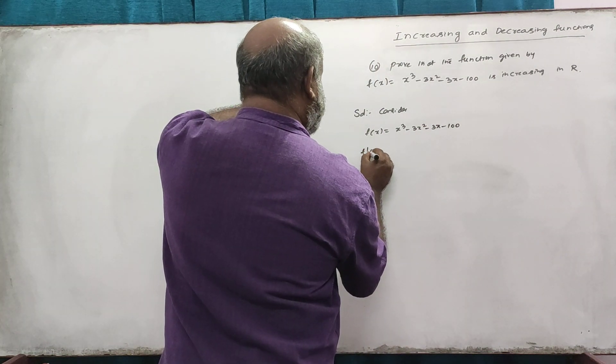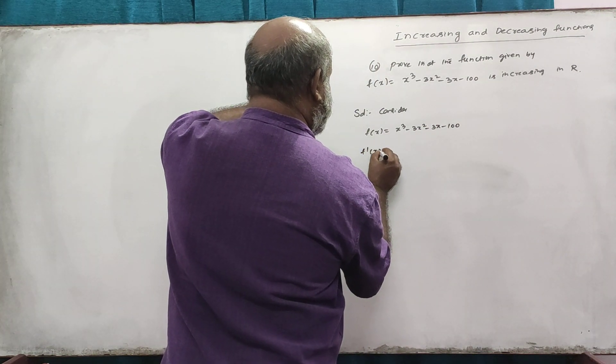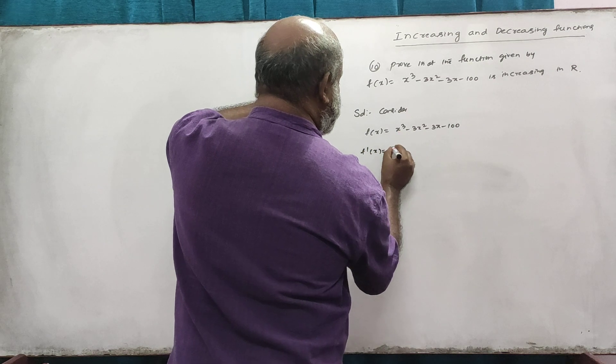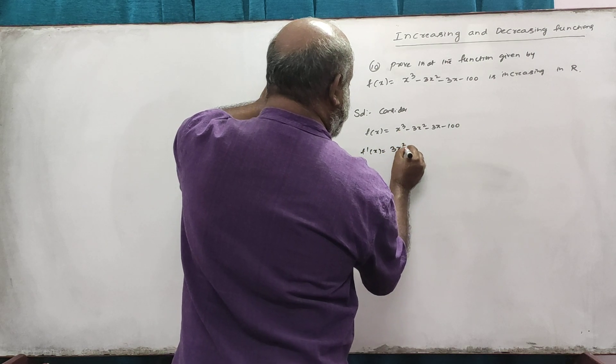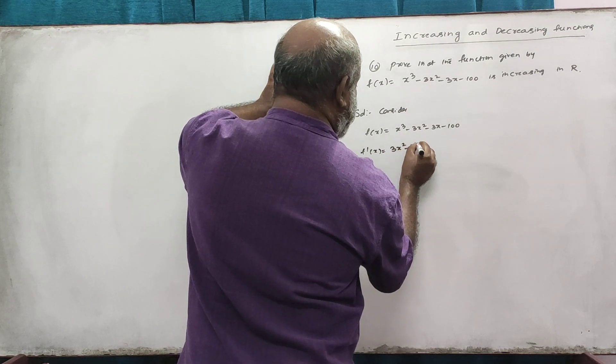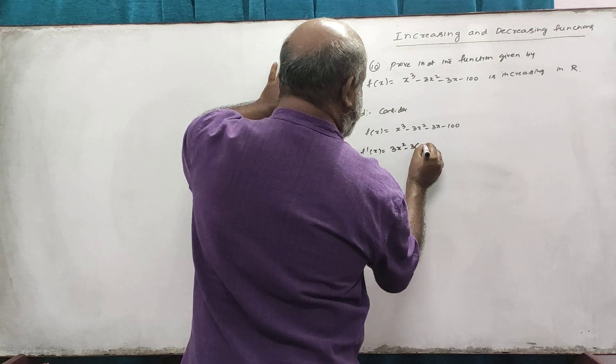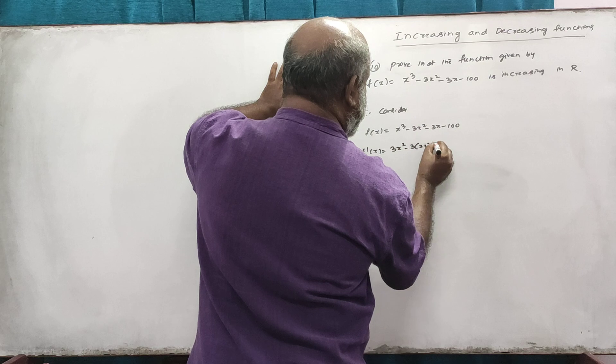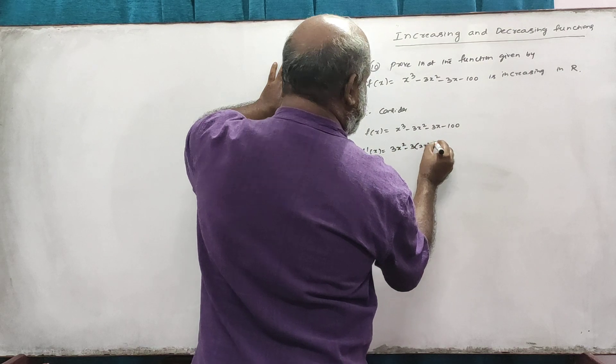Now, if f(x) is equal to x cubed, then f'(x) will be equal to 3x squared minus 3x minus 3.